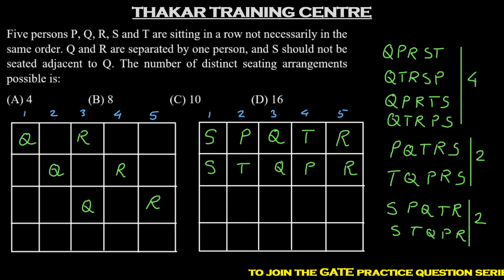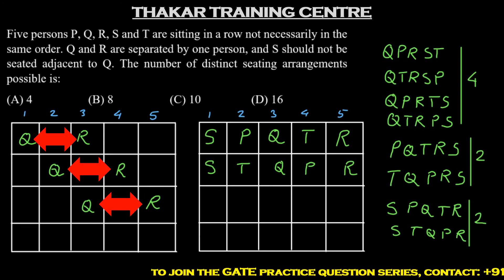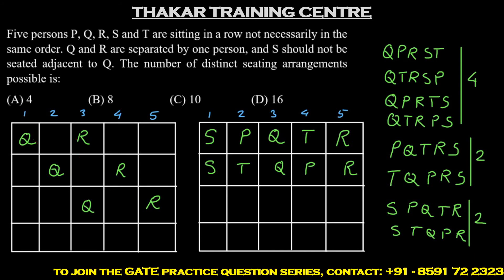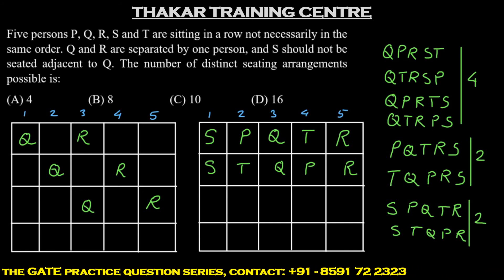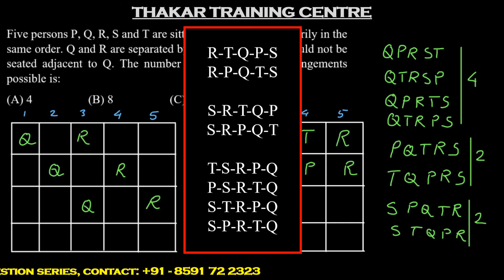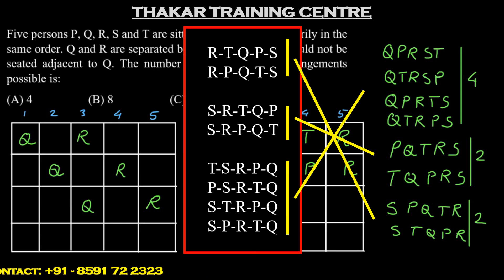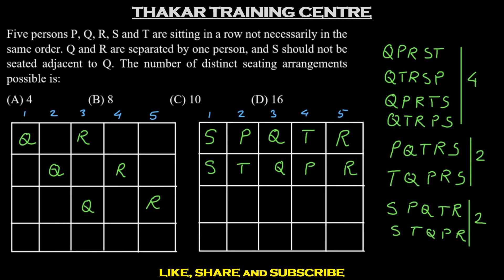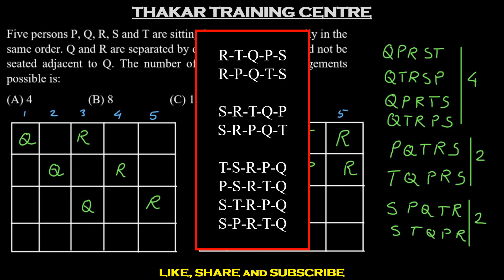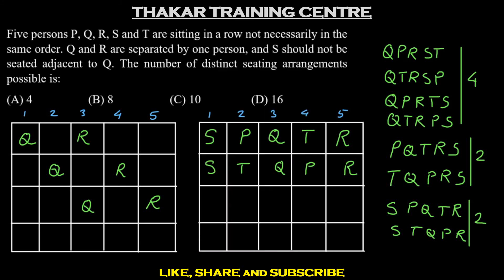What can also happen is that Q and R can interchange their positions. If that were to happen, we will also have another 8 arrangements, which are the exact reverse of the arrangements we have so far seen. So we will have a total of 8 arrangements plus another 8 when we consider the interchanging of Q and R, ending up with 16 distinct arrangements. So the answer for this question is 16.